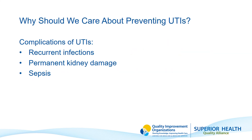If not treated, urinary tract infections can result in serious complications that include recurrent UTIs, kidney damage, and/or sepsis. Sepsis is the body's extreme response to an infection and is a life-threatening medical emergency. Sepsis happens when an infection triggers a chain reaction throughout your body. Without timely treatment, sepsis can rapidly lead to tissue damage, organ failure, and sometimes death.